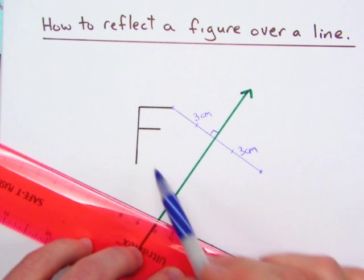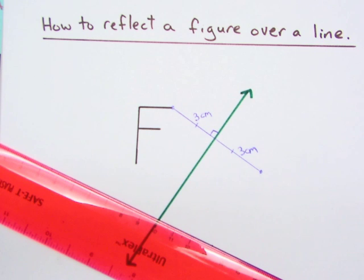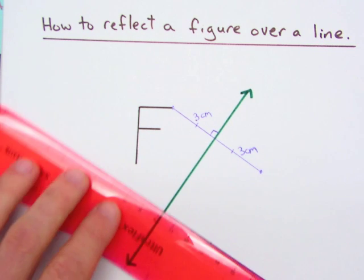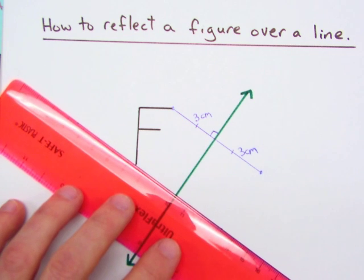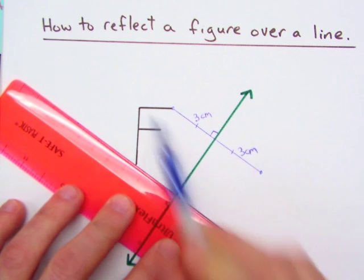So if I repeat this process for all the points, I will have reflected my figure F. Let's move on to the next point up here in the corner.